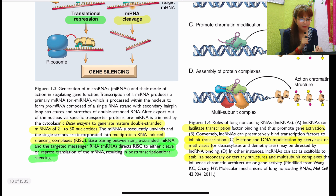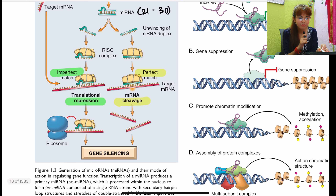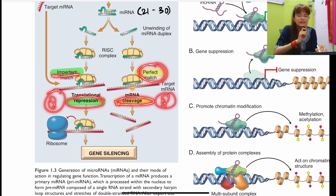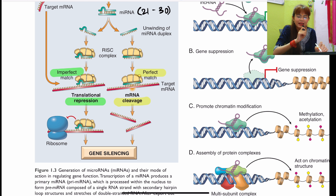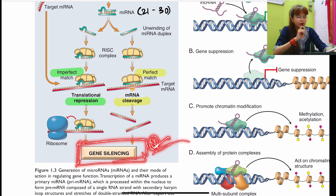Once incorporated into the RISC complex, two things may happen depending on base pairing between the miRNA and the target mRNA. If there is a perfect match, there will be mRNA cleavage. If there is an imperfect match, it causes repression of translation. Both mechanisms result in gene silencing. Perfect match leads to cleavage; imperfect match leads to translational repression — this is an important MCQ concept.